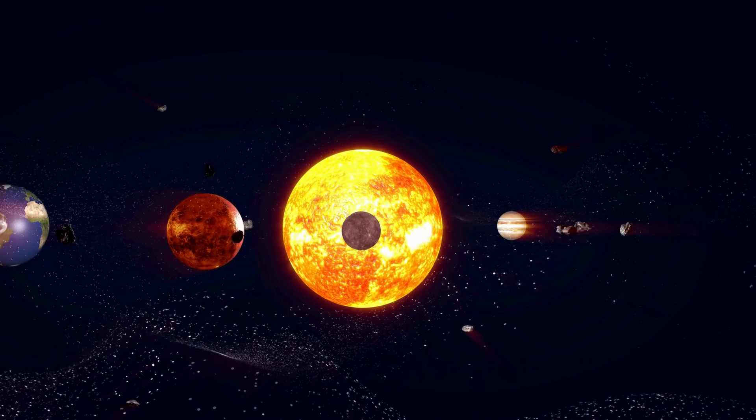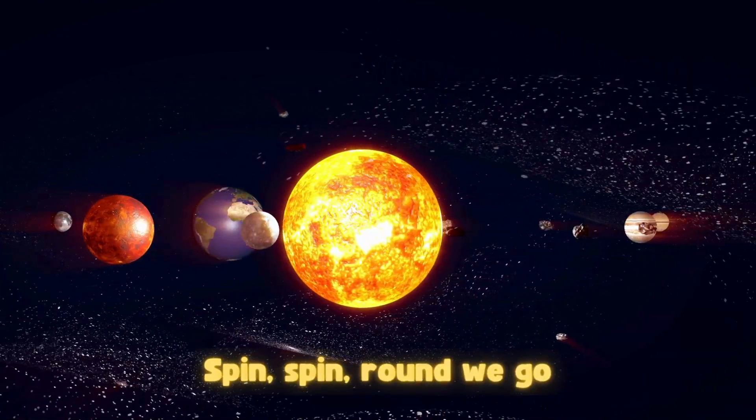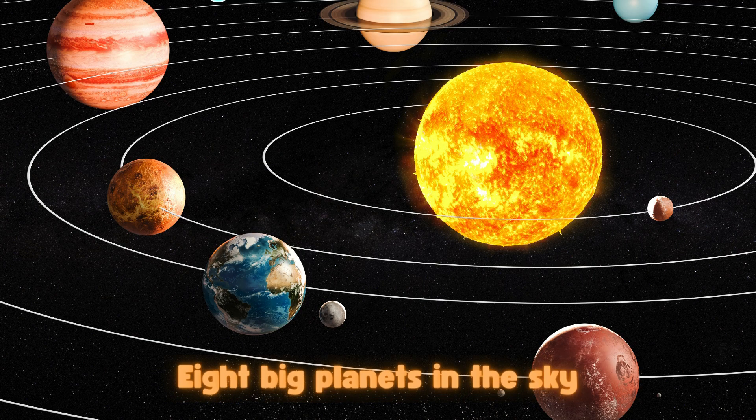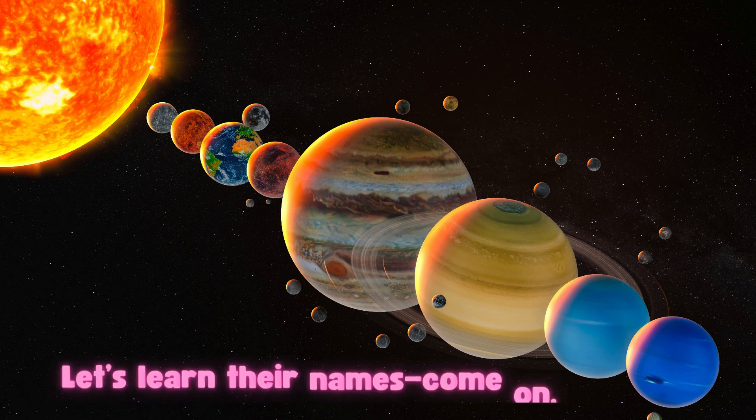Spin, spin, round we go. Orbit fast, orbit slow. Eight big planets in the sky. Let's learn their names.